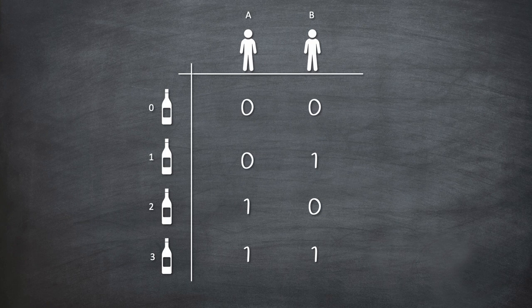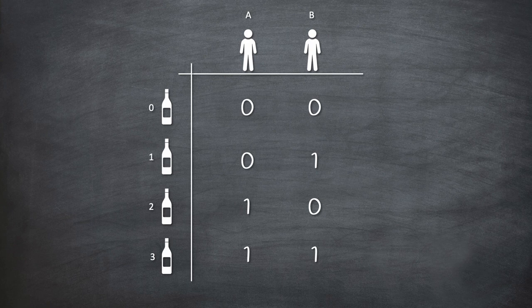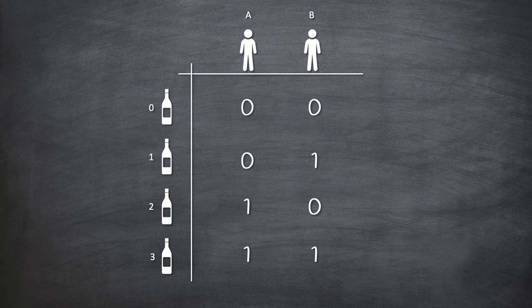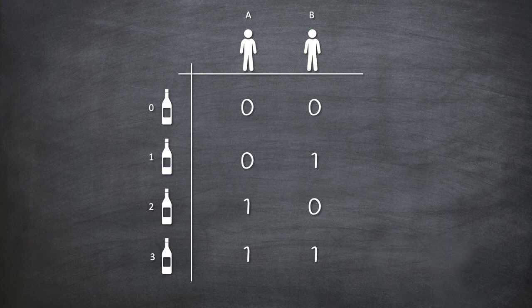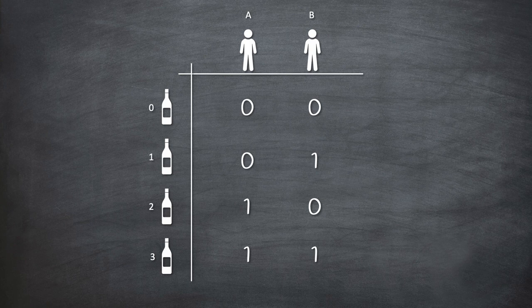Let's try to understand how this strategy works. If bottle 0 contains poison, no one will die because no one drank from it. If bottle number 1 contains poison, prisoner B will die because prisoner B was the only one who drank from bottle number 1. Similarly, if the poison is in bottle number 2, prisoner A will die. And if bottle 3 was poisoned, both prisoner A and B will die.